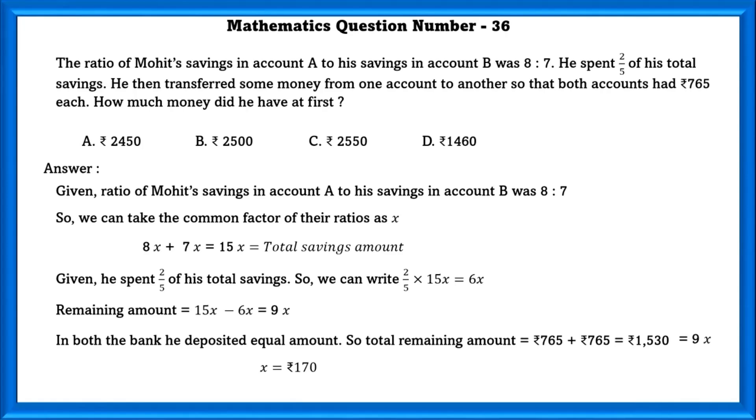Now, the given total savings amount is 15X. So using this, the total savings amount will be 2550.